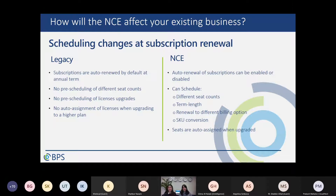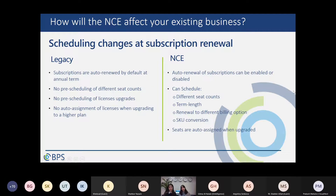Auto-renewal — we've been waiting for this. Your subscription can be set to not renew automatically after one year. You can disable or enable it. Another thing you can pre-schedule is increasing or decreasing the seat count. For example, if you currently have 100 licenses and on the renewal date you want to decrease this number, you can pre-schedule this change so the changes will be done on the renewal date. You can also change the term length, for example from annual to monthly, and you can pre-schedule the billing option from monthly to annual.